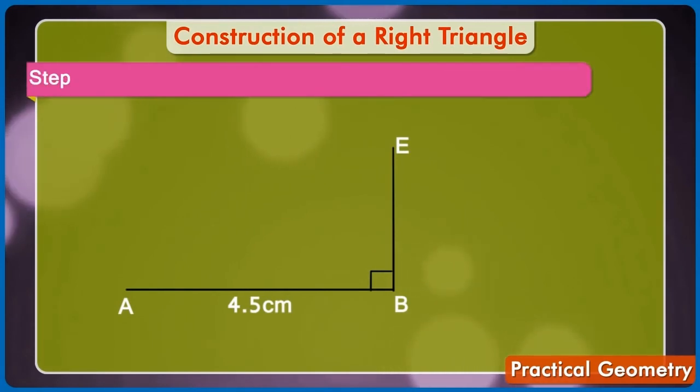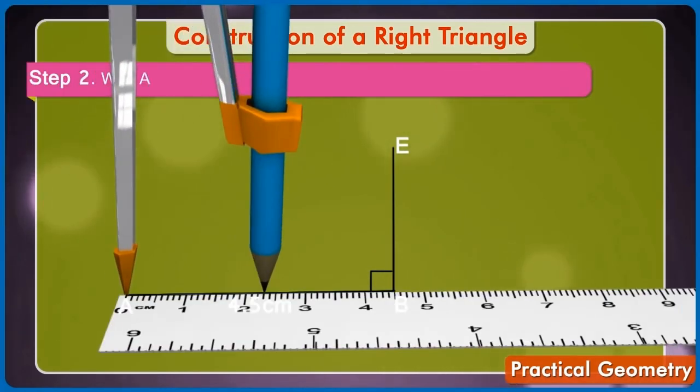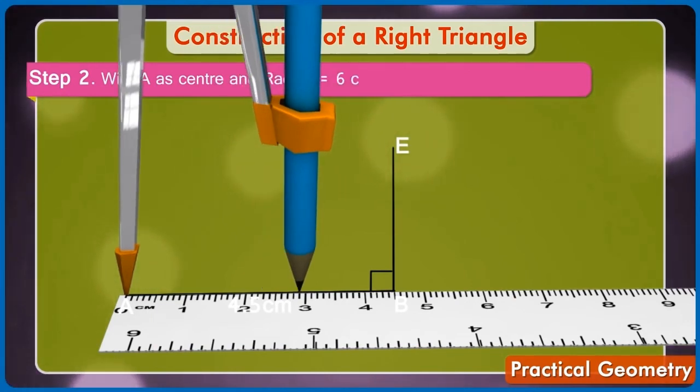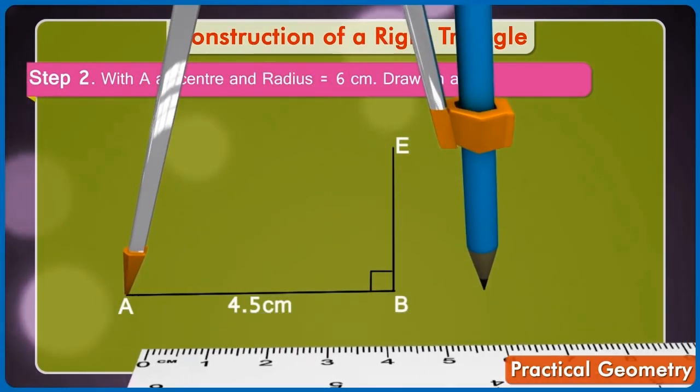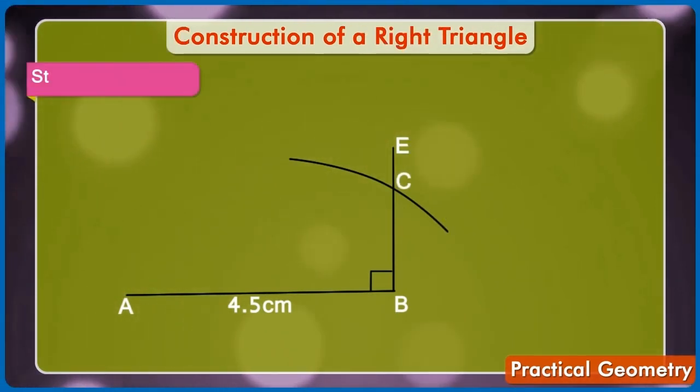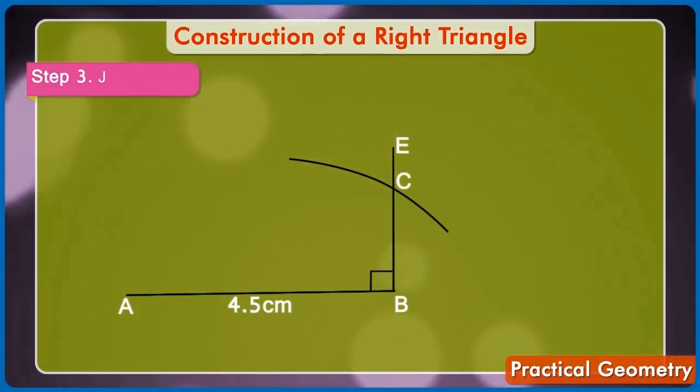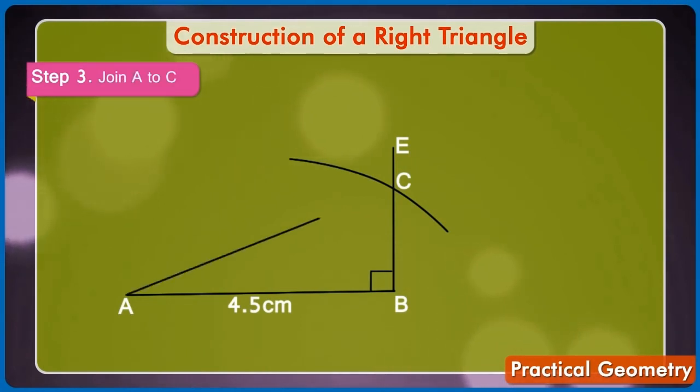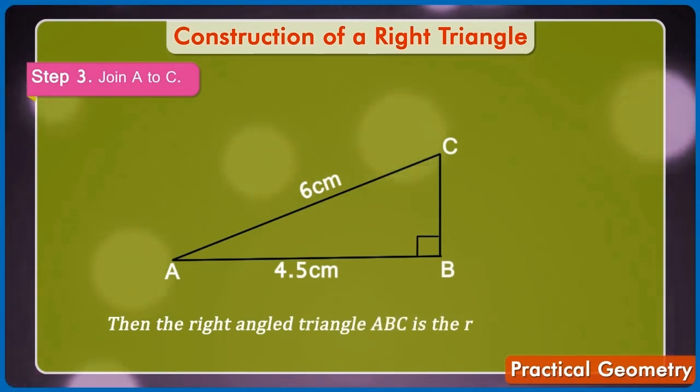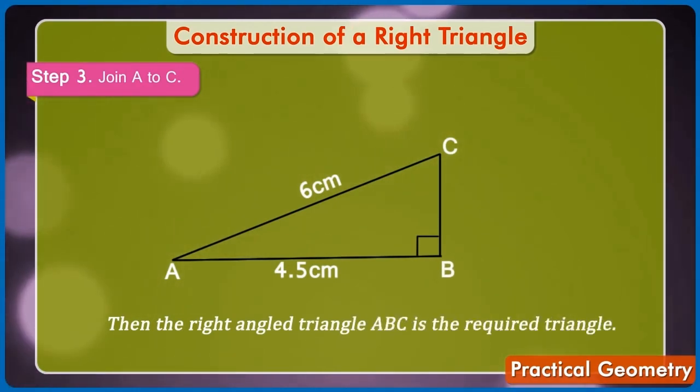Step 2: With A as center and radius is equal to 6 cm, draw an arc to cut B at C. Step 3: Join A to C. Then the right angled triangle ABC is the required triangle.